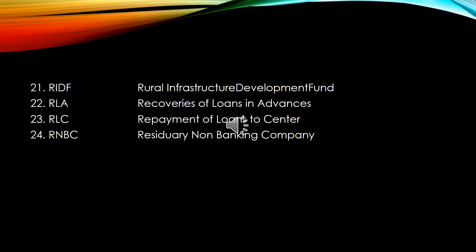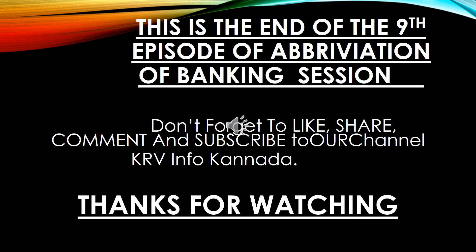21. RLA – Recovery of Loans in Advance. 22. RLC – Repayment of Loans to Centre. 23. RNBC – Residual Non-Banking Companies. 24. RO – Regional Office. That brings us to the end of Banking Abbreviations Episode 9.